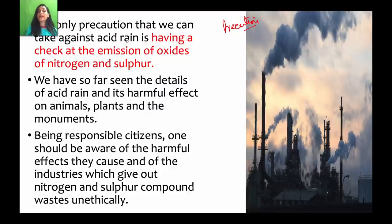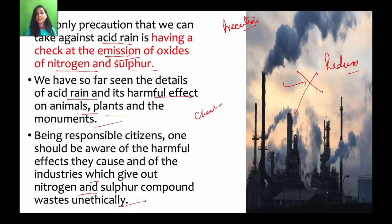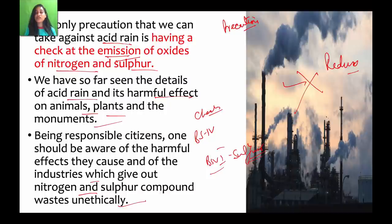The biggest reason for acid rain is oxides of nitrogen and sulfur. So we must stop and reduce emissions of nitrogen and sulfur. We have studied harmful effects on animals, plants, and monuments. As responsible citizens, we must stop these emissions and follow government guidelines. Many industries unethically release nitrogen and sulfur compounds, even violating government guidelines — this needs to be checked. India has moved directly from BS-4 to BS-6 engines to reduce sulfur emissions, helping stop acid rain and air pollution.